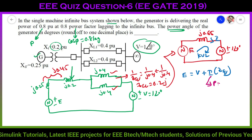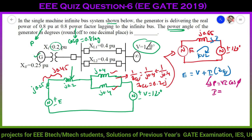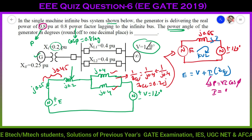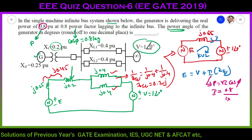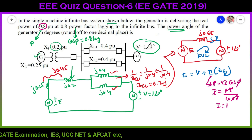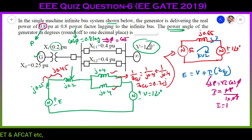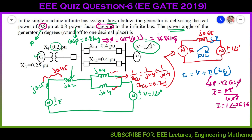Using the real power formula P = V·I·cosφ, we get I = P/(V·cosφ) = 0.8/(1 × 0.8) = 1 A. Since the power factor is 0.8 lagging, the phase angle is cos⁻¹(0.8) = 36.86°, so I = 1∠−36.86°.